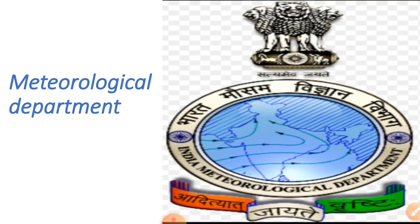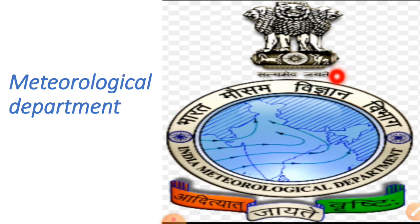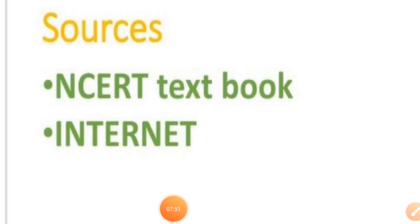What is the meteorological department? Weather reports are prepared by the meteorological department of the government. This department collects data on temperature, wind speed, humidity, rainfall, and so on, and uses it to make weather predictions. Here is the symbol of India's meteorological department — Bharat Mausam Vigyan Vibhag — which provides information about weather. Today's topic ends here, students. We will meet in the next class.